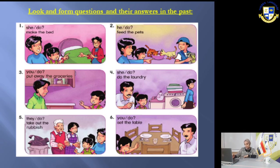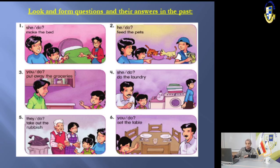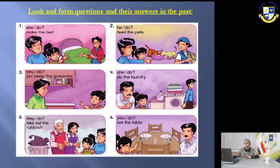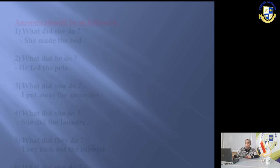Number three: 'put away the groceries.' The question is: 'What did you do?' When you ask someone with 'you,' you answer with 'I': 'I put away the groceries.' Note that 'put' is the same in the present and in the past — same pronunciation, same spelling. Number four: 'do the laundry.' Question: 'What did she do?' Answer: 'She did the laundry.' The past of the verb 'do' is 'did.' For numbers five and six, I want you to do them on your own as practice.